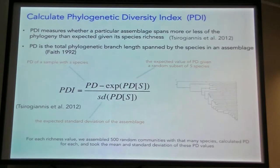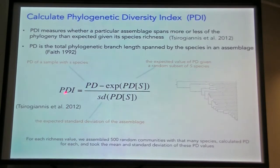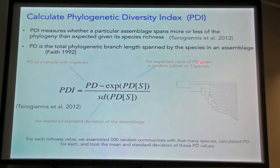To do this, we calculated a measure of phylogenetic diversity called PDI. We take Faith's original phylogenetic diversity measure — the sum of all branch lengths spanned by the species within a given assemblage — but then effectively standardize or correct for sampling effects, specifically variation in the total number of species. PDI is a measure of the phylogenetic diversity of the sampled species observed within a given grid cell, discounted by the expected value of phylogenetic diversity given a random subset of the total number of species.